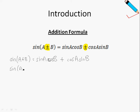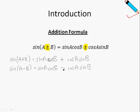On the other hand, the sine of A minus B is equals to the sine of A multiplied by the cosine of B, minus the cosine of A times the sine of B. Just take note that when it's a plus on the left-hand side of the equation, you will also see a plus on the right-hand side. If you see a minus on the left-hand side, you will also see a minus on the right-hand side. That's for the sine function.